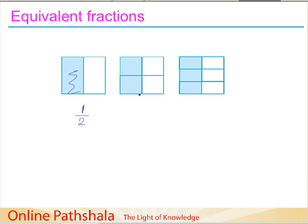The second figure is the same square but divided into four parts, so the denominator is four and the shaded parts are two, so the fraction is two by four. In the third figure the square is divided into six equal parts, the denominator is six, and three parts are shaded so the numerator is three, giving three by six.